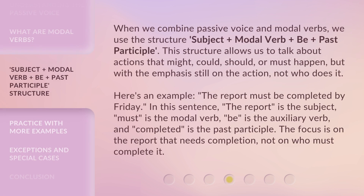When we combine passive voice and modal verbs, we use the structure: subject plus modal verb plus be plus past participle. This structure allows us to talk about actions that might, could, should, or must happen, but with the emphasis still on the action, not who does it. Here's an example: 'The report must be completed by Friday.' In this sentence, 'the report' is the subject, 'must' is the modal verb, 'be' is the auxiliary verb, and 'completed' is the past participle. The focus is on the report that needs completion, not on who must complete it.